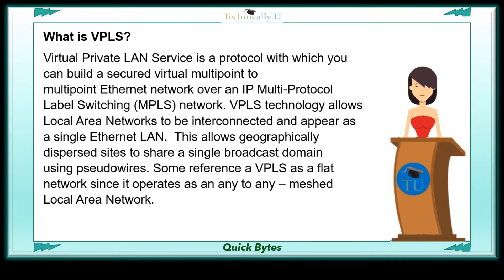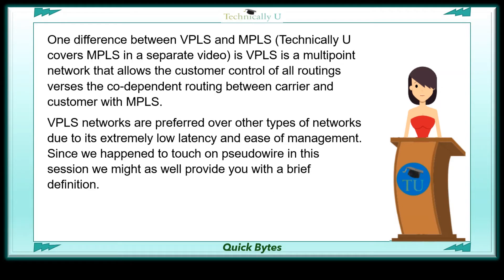VPLS technology allows local area networks to be interconnected and appear as a single Ethernet LAN. This allows geographically dispersed sites to share a single broadcast domain using pseudowires. Some refer to VPLS as a flat network since it operates as an any-to-any meshed local area network.